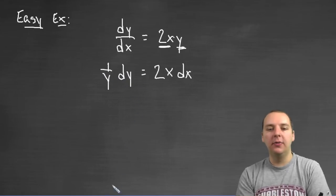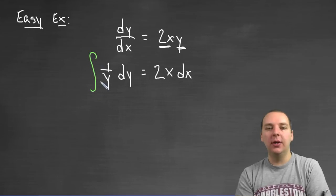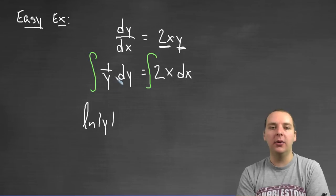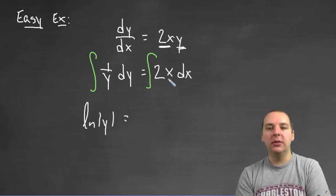So I've separated the variables, let me integrate these both now. The left side would become natural log of the absolute value of Y, that's a good old fashion Calc 1 integral, equals, and the integral of 2X would be X squared plus C.